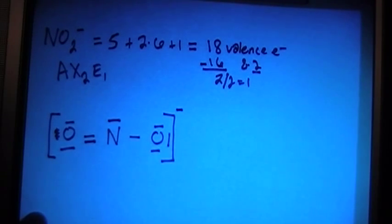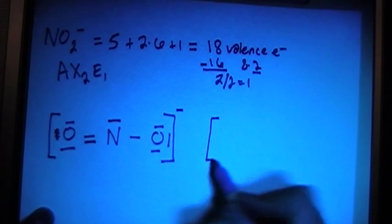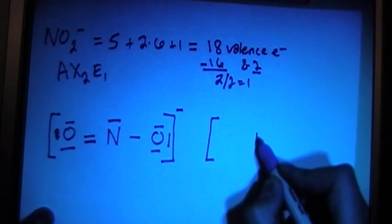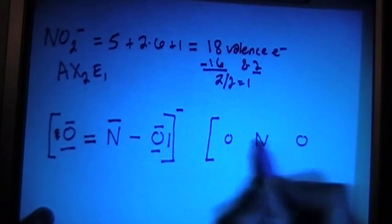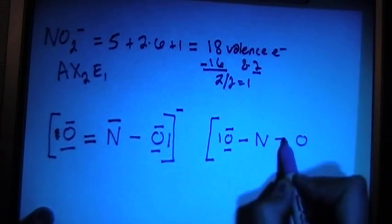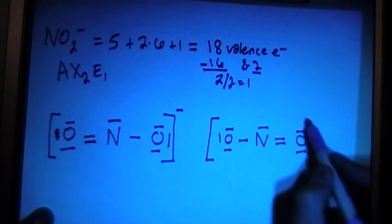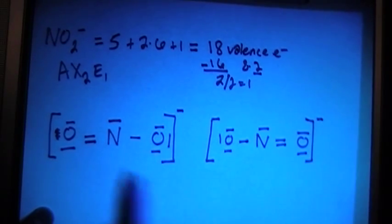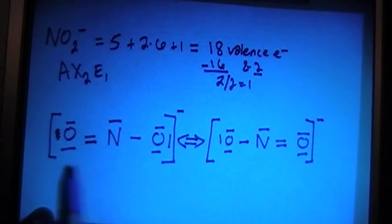And the answer is we can do that. This is what is called a resonant structure, so it's actually going to consist, this Lewis structure is going to consist of two different Lewis structures, where we have two different setups, where this is going to be the single this time, and this is going to be the double. So in this case, there's actually two correct answers, and they're both needed to fully describe how this compound is going to be drawn.